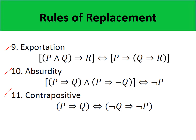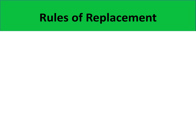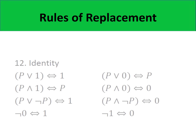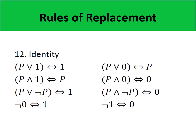We know that the original implication is equivalent to its contrapositive, and we have shown this in previous videos. Finally, we have identities. In the next video, you will learn about arguments and their validity using truth tables.